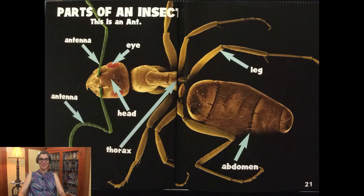Let's look at the parts of an insect. Can you find the antenna? There are two of them. How about the eyes? There are also two of them. Point to the head and find the thorax. And where's the abdomen? Count the legs.